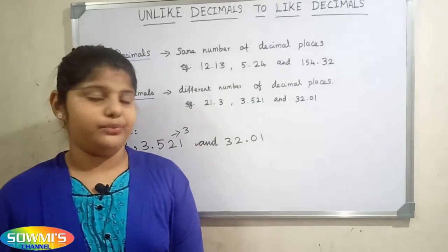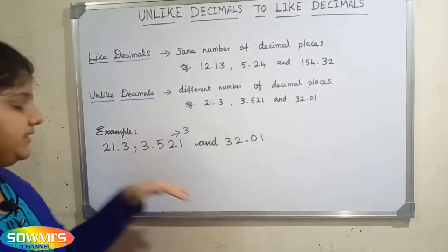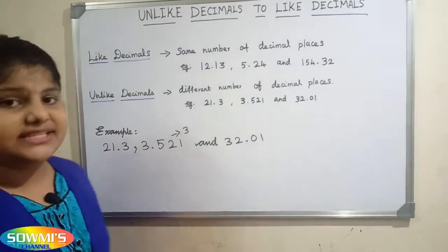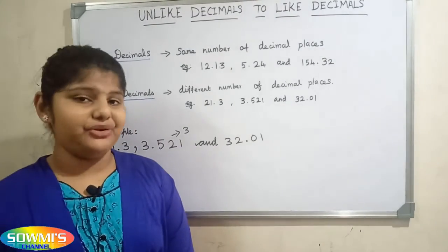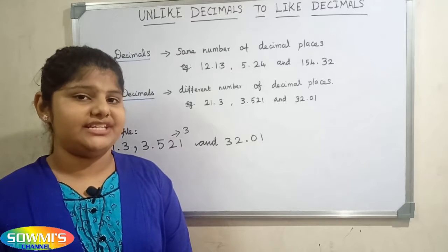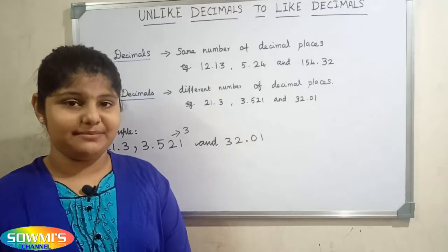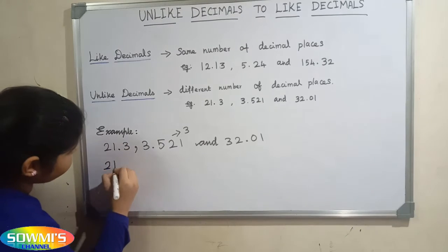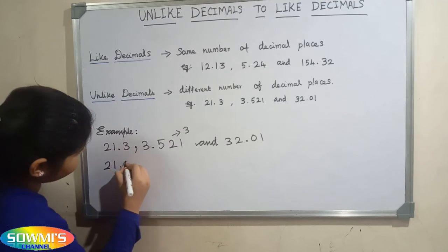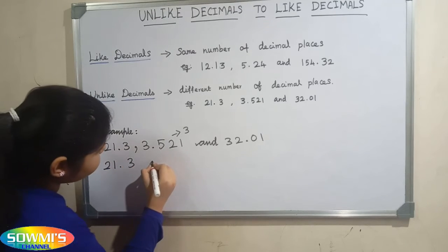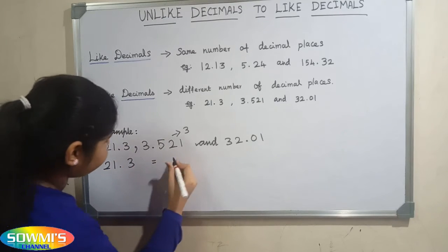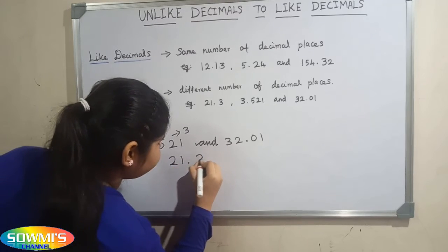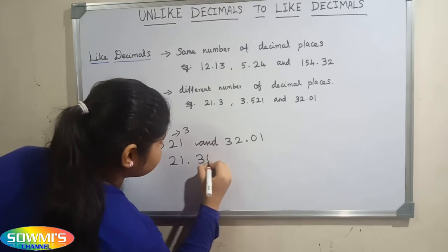Next we have to convert all the numbers into like decimals. To do this, we just add zeros to the extreme right of the decimal part. So 21.3 is equal to 21.300.